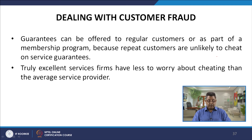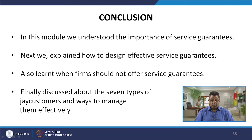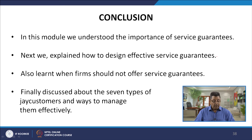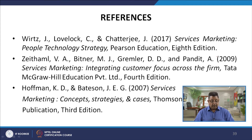To conclude, in this module we have understood the importance of service guarantees, explained how to design an effective service guarantee, learnt when firms should and should not offer a service guarantee, for which firms it is important and for which it is not, and how to make a service guarantee a sustainable competitive advantage. Finally, we have discussed the seven types of J customers and ways to manage them effectively. These are the three books from which the material for this module was drawn.